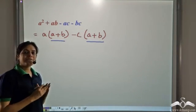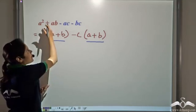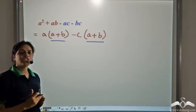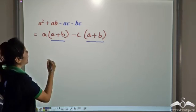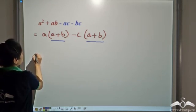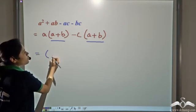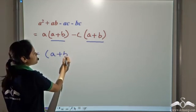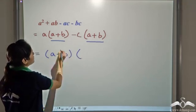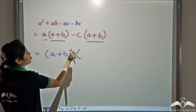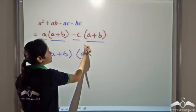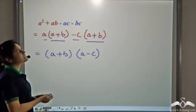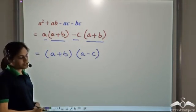We have been successful in dividing this expression into groups such that each group has a common factor. Now we factor out (a+b), taking a from the first group and negative c from the second group. So the factorized form of this expression is (a+b)(a-c).